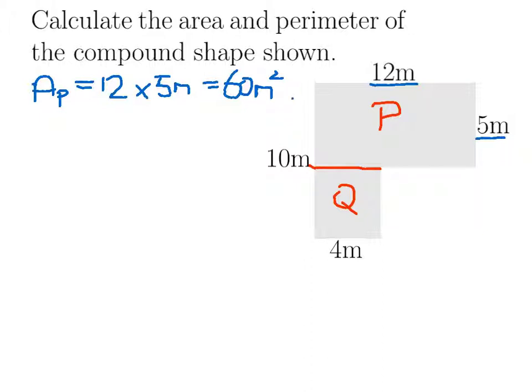Now for Q, we need to work out this length here. We know we've got a width of 4, but we don't have this length. But we do know that in total we have 10 metres here down the left-hand side, and 5 metres are already taken up here. That means this length must be 5 metres. So the area of Q is going to be 4 metres times 5 metres, and that gives us 20 metres squared.